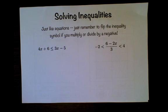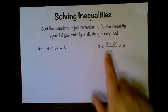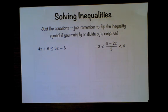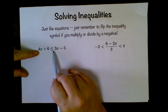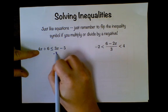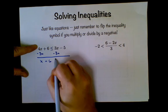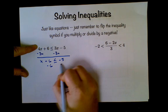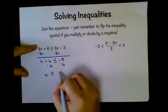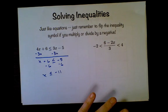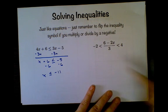Okay then, inequalities. Inequalities are just like equations. The only difference is you have inequality symbols instead of equal signs, and if you multiply or divide by a negative number you just have to remember to flip it. So a less than becomes a greater than and vice versa. So let's see, I have 4x plus 6 is less than or equal to 3x minus 5. I'm going to subtract 3x from both sides, I get x plus 6 is less than or equal to negative 5. Take away 6 from both sides, x is less than or equal to negative 11.